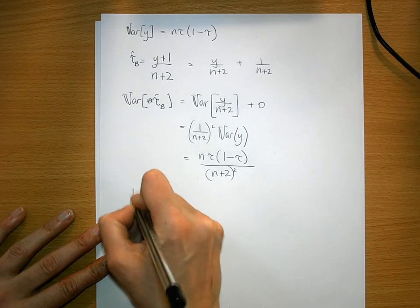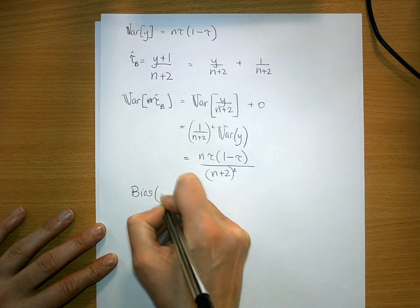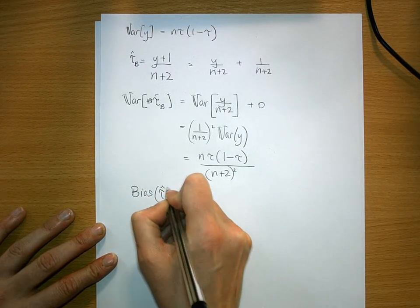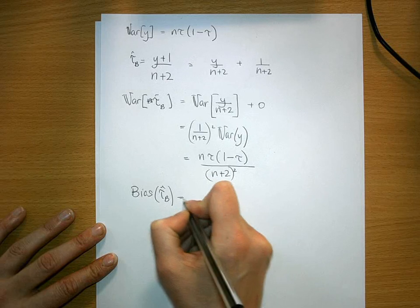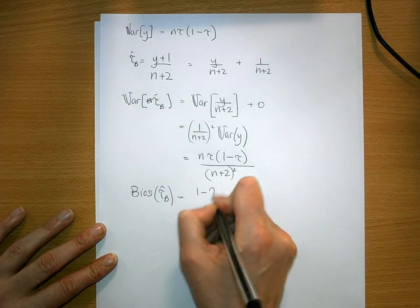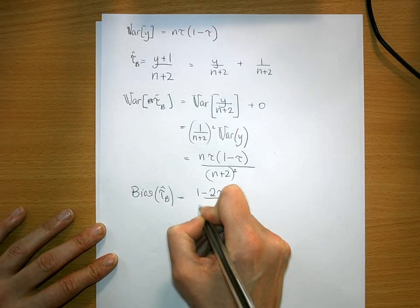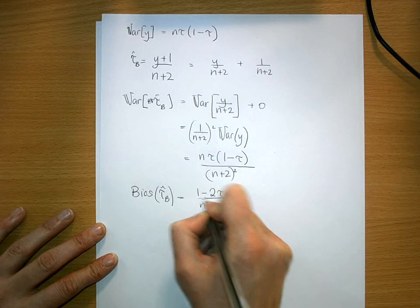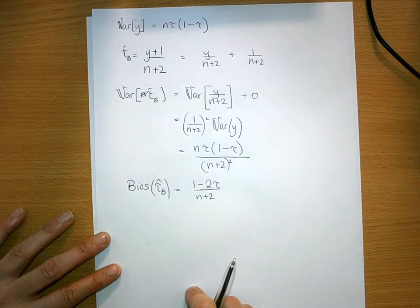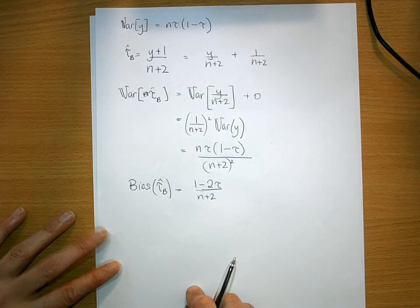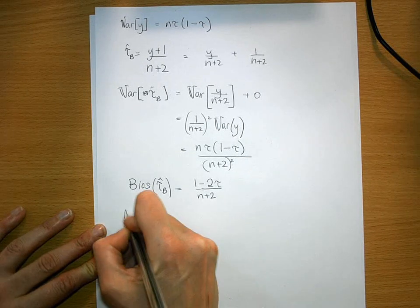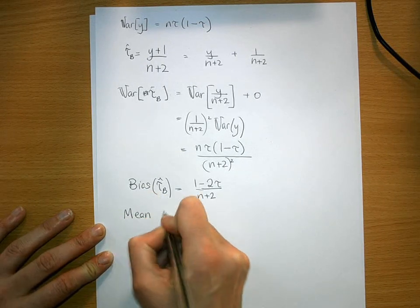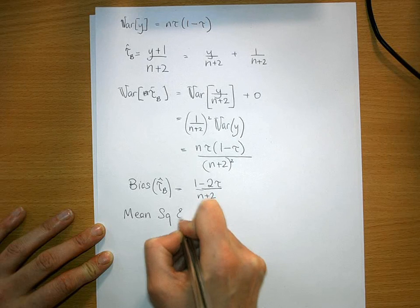You combine that with the bias of the Bayesian estimator, which if you remember correctly was (1-2*tau)/(n+2), and we can then calculate what's known as the mean square of the estimator.